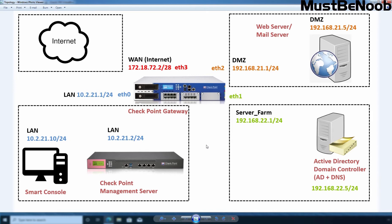This is the lab topology which I am going to use in this lab guide series. This is our Security Gateway on which we have already completed the configuration part. You can see that I have attached 4 network adapters to the firewall: ETH0 for Checkpoint Management, ETH1 for Server Farm where I will store my Domain Controller and LAN Computers, ETH2 for DMZ, and ETH3 for Internet Connectivity. As this is a test environment in VirtualBox, the IP address on the internet interface is from a private IP address range.